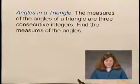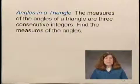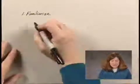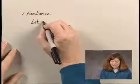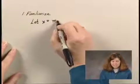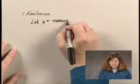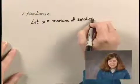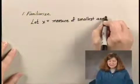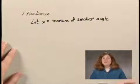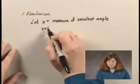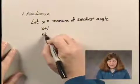Now, how do we find those three consecutive integers, and what do you use for a variable? Well, when you're using consecutive integers, you can let x equal the measure of the smallest angle. In other words, that would be the first consecutive integer. Then the other two angles would be x plus 1 and x plus 2.